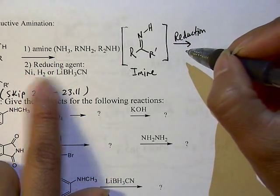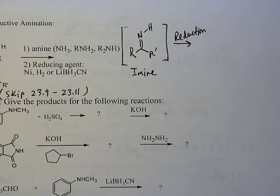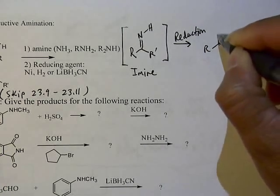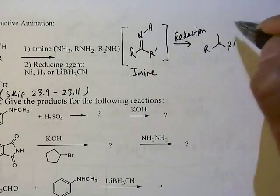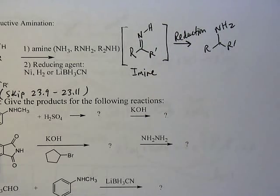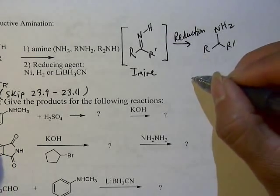The reduction uses lithium cyanoborohydride, or you could hydrogenate with nickel. Your book mainly uses lithium cyanoborohydride, so you are going to do the reduction. Basically you're putting hydrogen here and hydrogen here, so you are getting the amine.